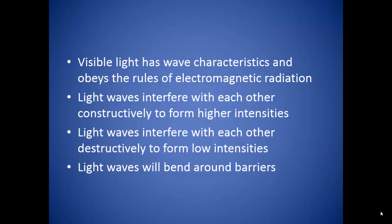So overall we know that visible light has wave characteristics and obeys the rules of electromagnetic radiation. Those light waves are going to interfere with each other constructively to form higher intensities of light. These are going to be reflected as bright spots on a screen. Light waves can also interfere with each other destructively to form low intensities or dark spots on a screen.